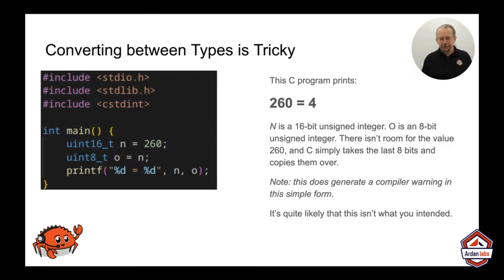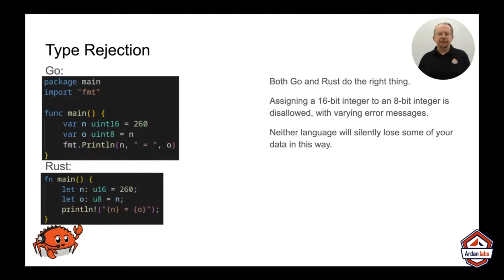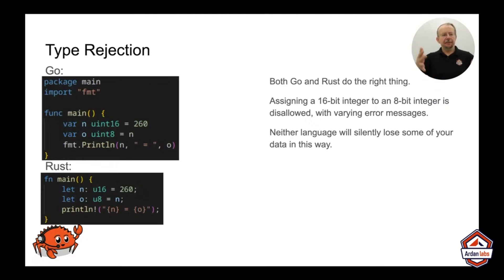The good news is that in this simple form, you can get GCC to give you a warning if you enable all warnings. Go and Rust protect against this by making it a little harder to inadvertently assign from one type to another. In C, it's called type coercion because you are literally coercing one type to fit into another and just dropping any additional data that's in the way that won't fit.